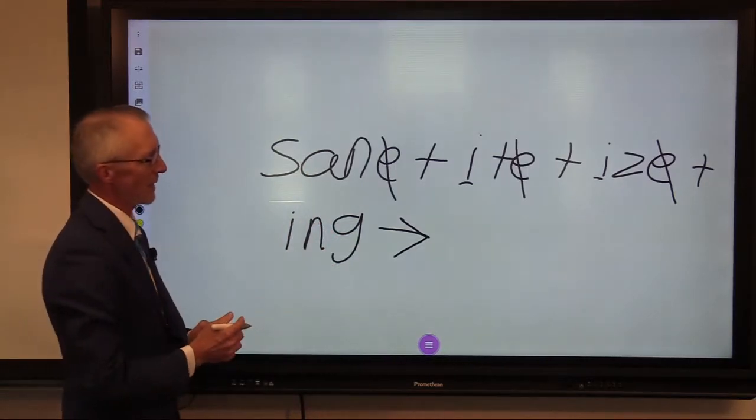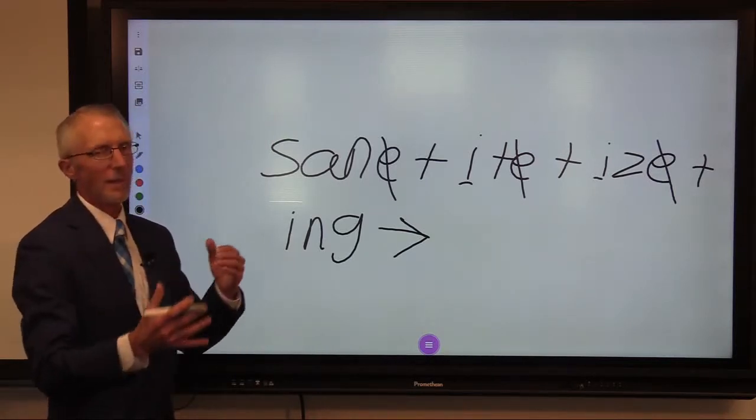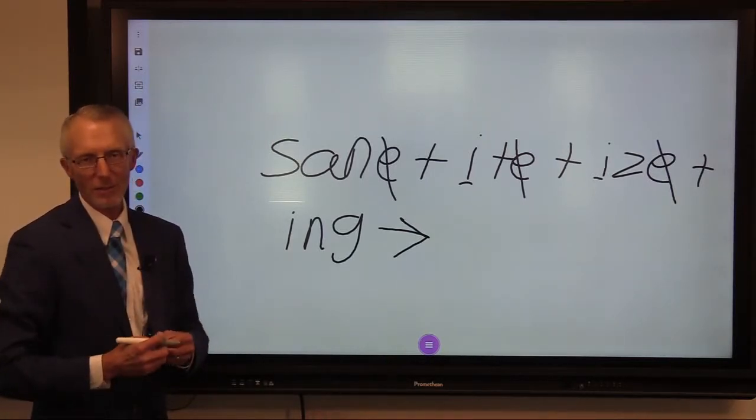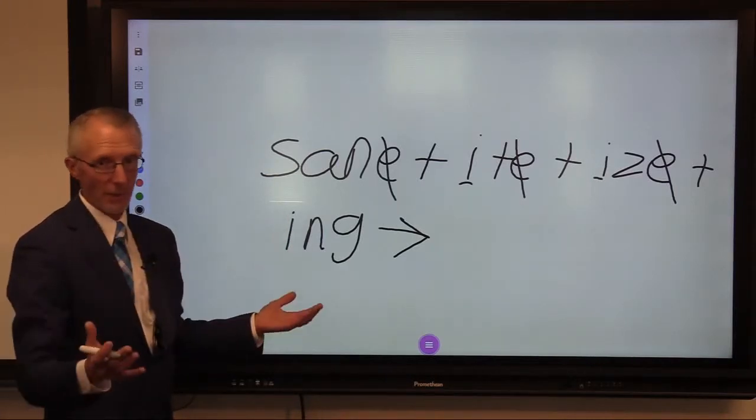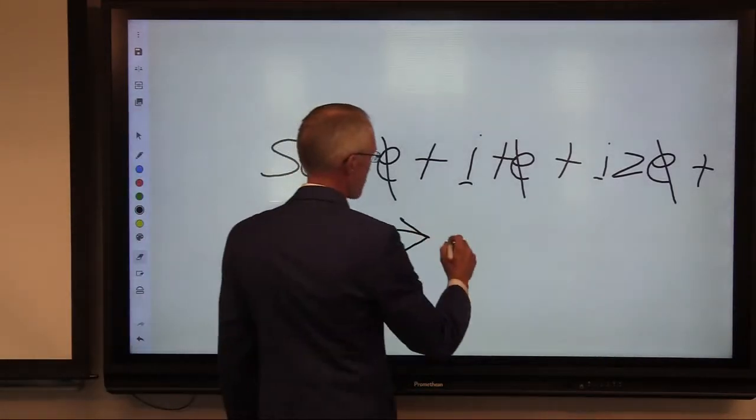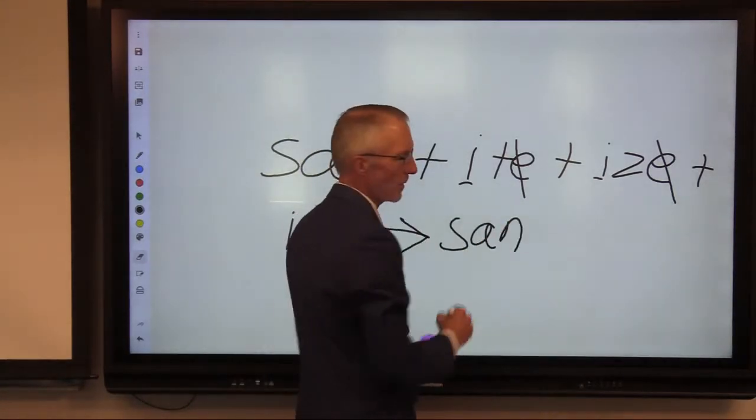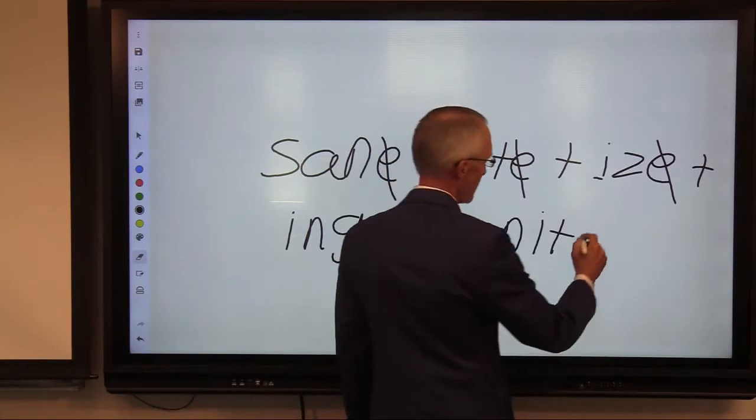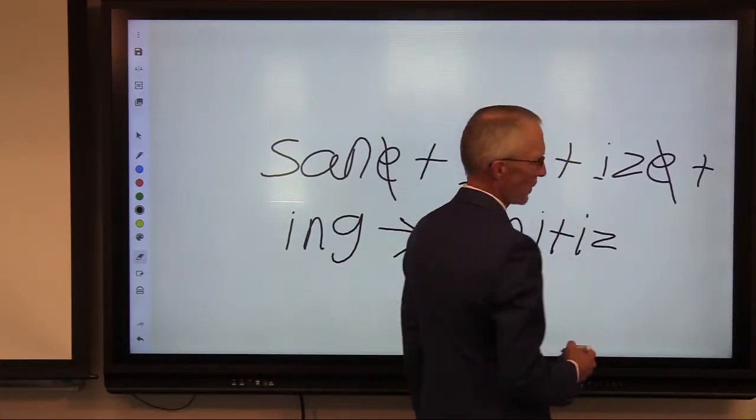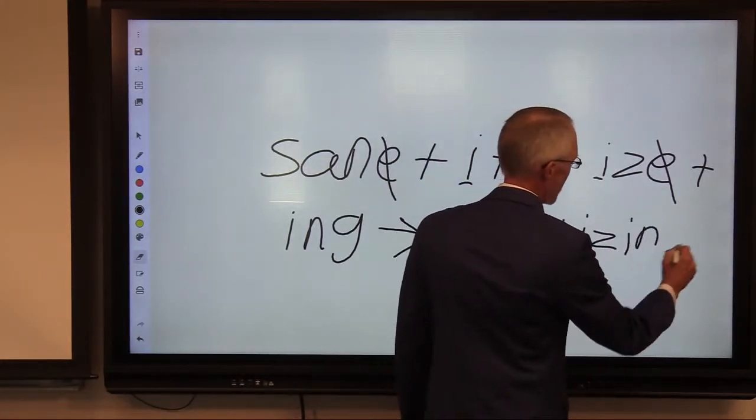Single non-syllabic E, Y-I toggle, and doubling are the only three suffixal conventions that we have to make up our language. And we end up with S-A-N replace the E, I-T replace the E, I-Z replace the E, I-N-G.